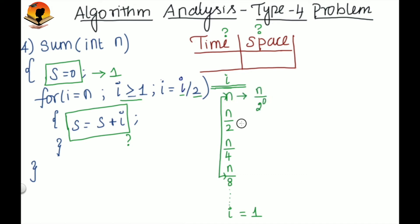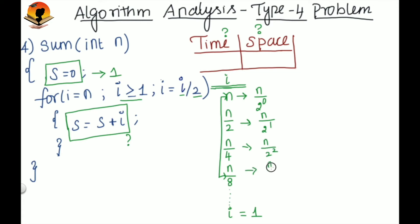Write these values in terms of powers of 2: this is n / 2^0, this is n / 2^1, this is n / 2^2, this is n / 2^3, and so on, until n / 2^k equals 1.